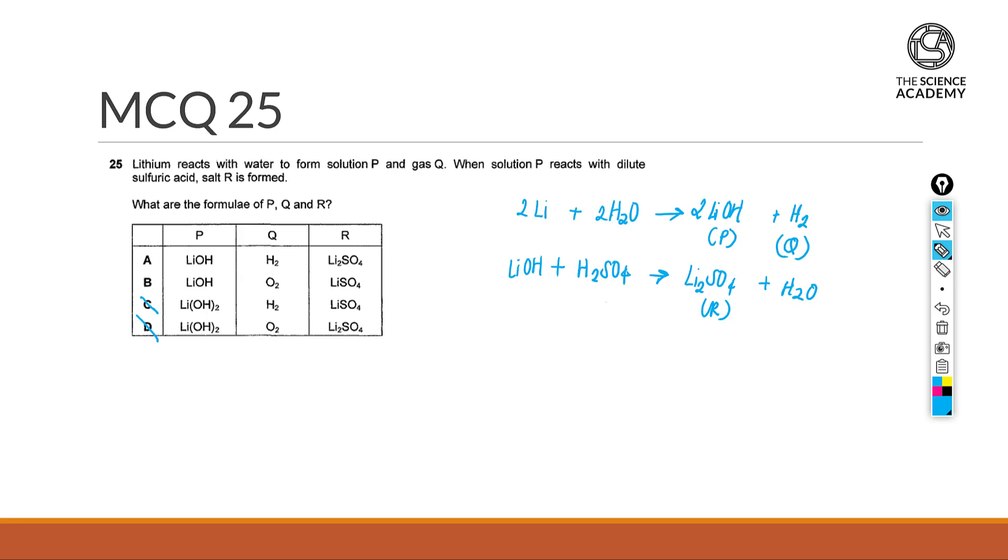Because to form this salt, we know that lithium has a charge of plus one and the sulfate anion has a charge of 2 minus. To form the salt, we will just cross the charge and bring down the number only without the sign.